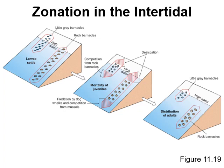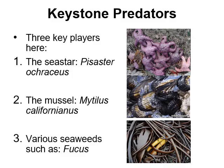So what you see is little gray barnacles and rock barnacles settling as larvae throughout a wide area, but only those that settled in the middle zone actually survive to adulthood in the rocky intertidal zone. That's how abiotic and biotic factors together drive zonation.